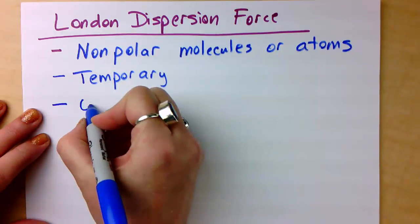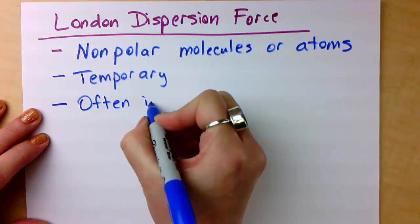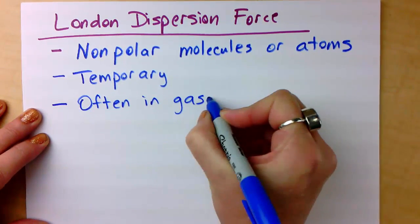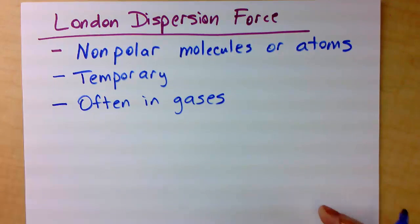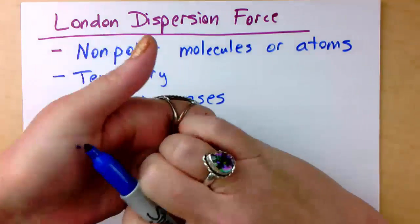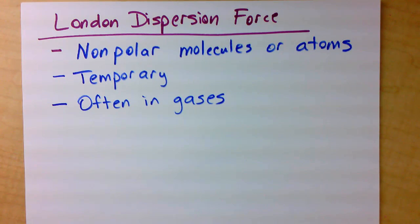Finally, we see London dispersion forces often in gases. They're a weak force, so they're not strong enough to hold together tight enough to be in the liquid or solid state. That's why we often see gases that exhibit London dispersion forces.